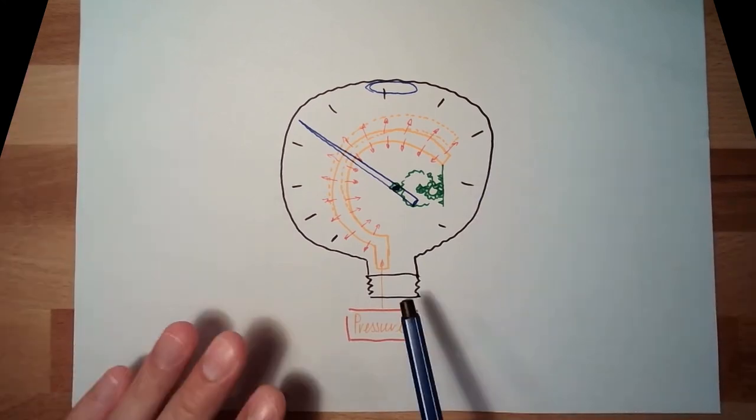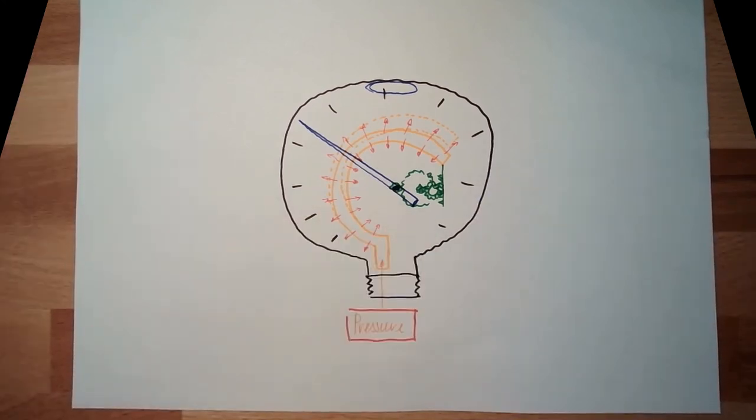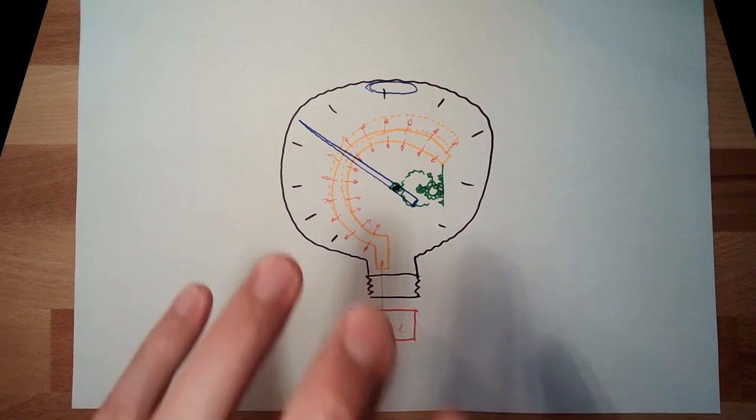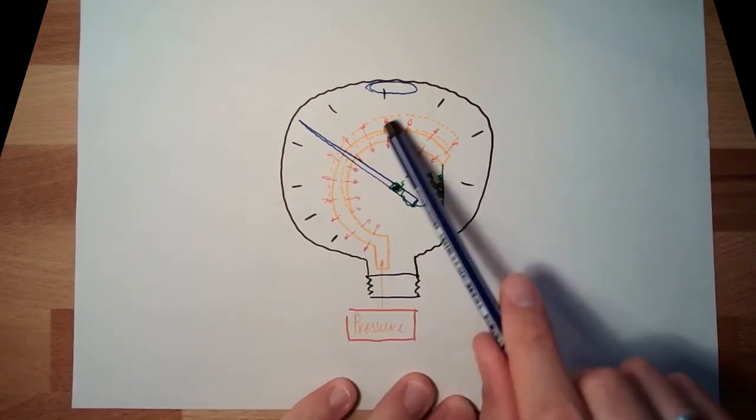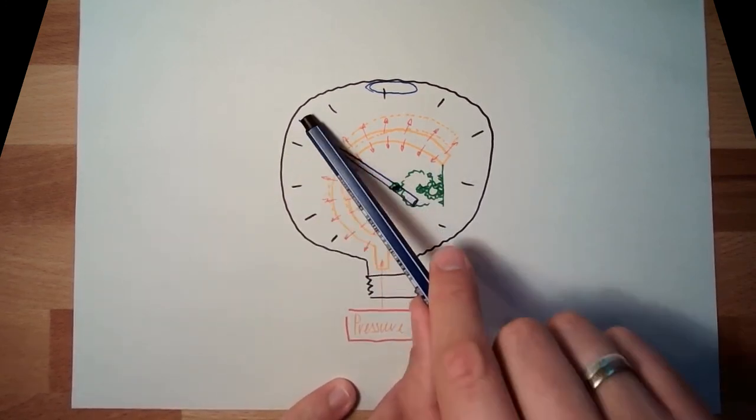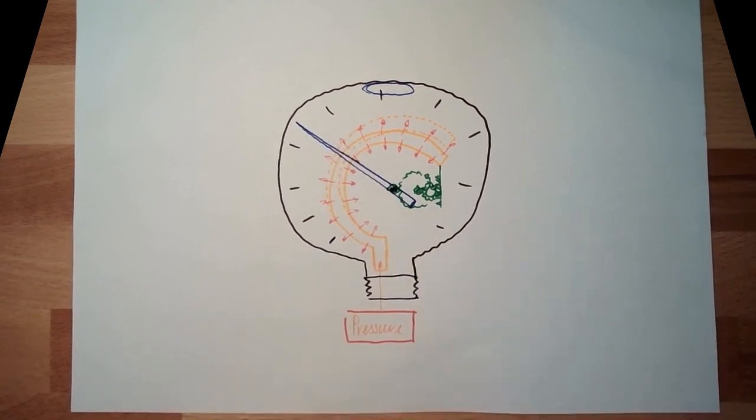This is a typical example of what we talked about, this measurement chain in one device. Sensor, amplifier, display.